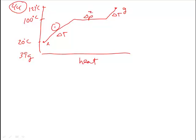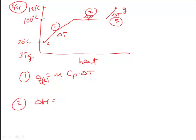So this is step one, this is step two, this is step three. For step one, we use our Q equation for the liquid. For step two, we use our delta H equation, which is the heat of vaporization times the mass. And for step three, we use our Q equation for the gas.